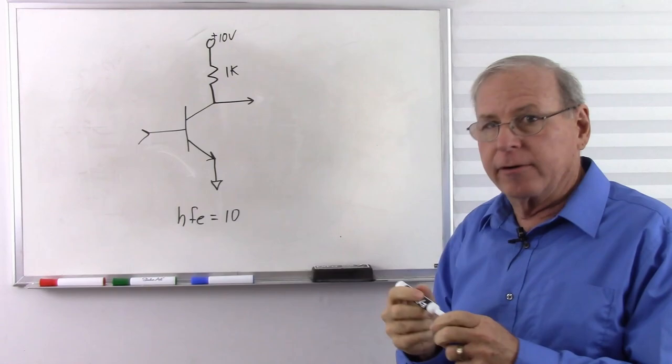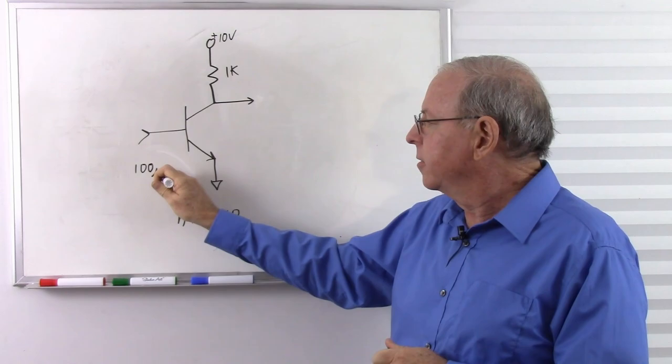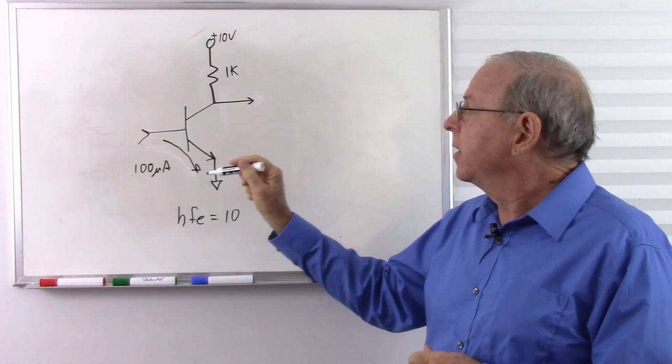I have a 1K resistor here and a positive 10 volt power supply. So what's going to happen if I put 100 microamps, or one tenth of a milliamp, from the base to the emitter?